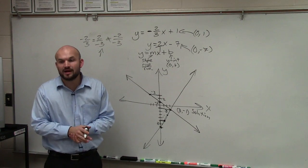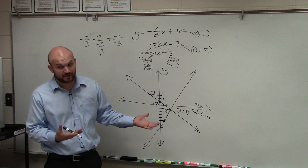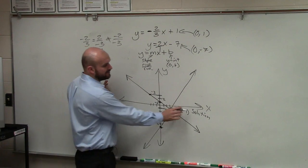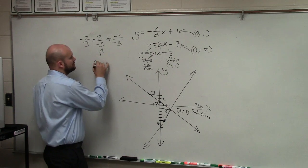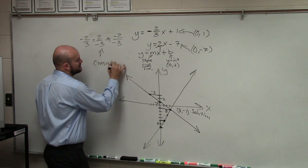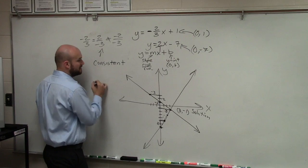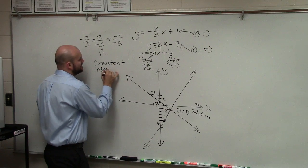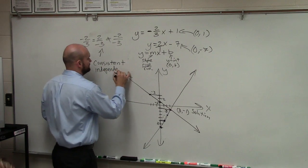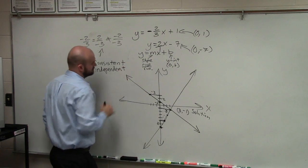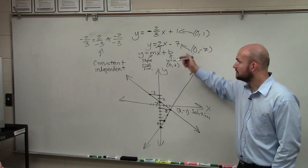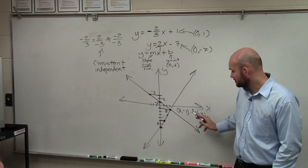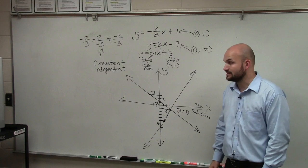Now, you also are going to have to describe the type of system. So you're definitely going to want to write this down. If you have a point where they intersect, you have a solution. This is what we call a consistent system, and it is independent. If you don't write this down, you're going to forget it. I'm going to do three examples for you. Consistent, independent, and the point is your solution. Make sense?